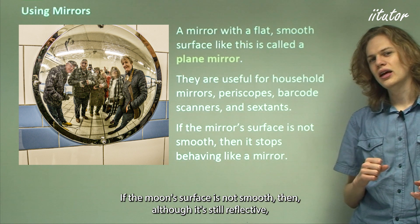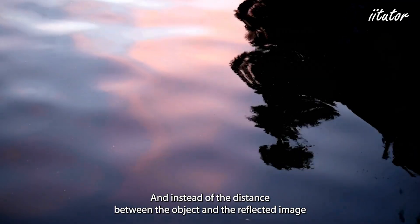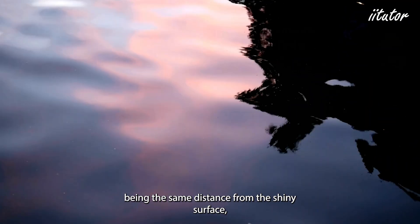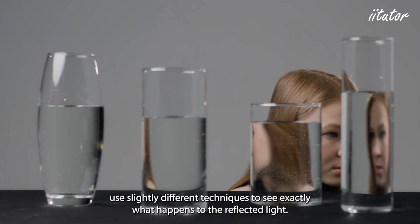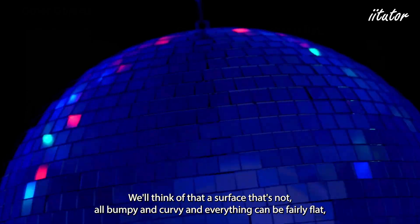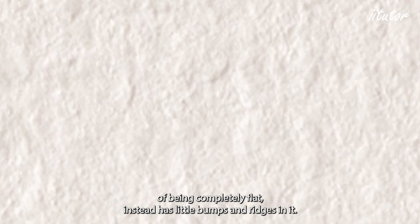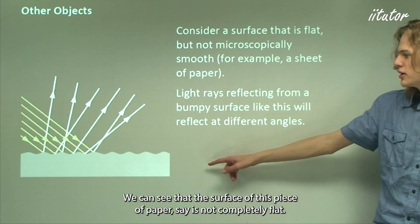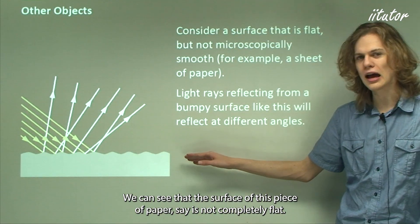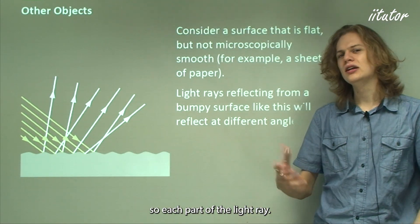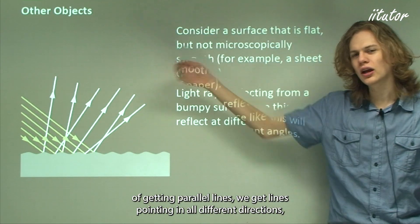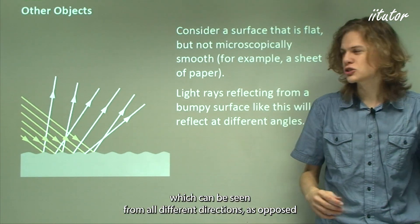If the mirror surface is not smooth, although it's still reflective it stops behaving like a plane mirror. The distance between the object and the reflected image is no longer the same as with a plain flat mirror. Think about a surface that looks fairly flat but is not flat under a microscope — instead of being completely flat it has little bumps and ridges. The light rays that reflect from such a surface aren't all parallel once they reflect, and instead of getting parallel lines we get lines pointing in all different directions, which can be seen from all different directions.